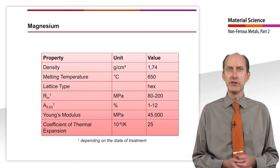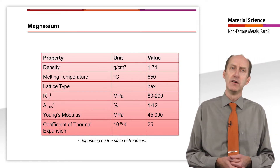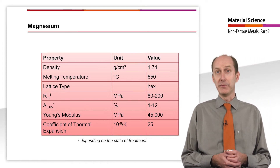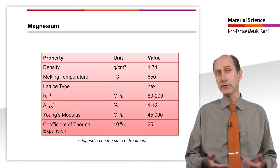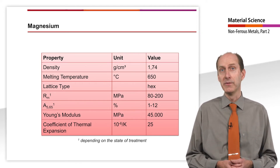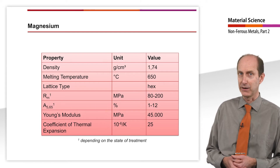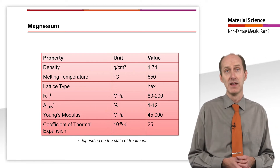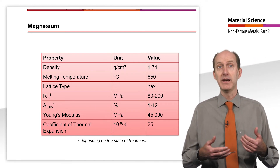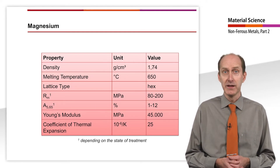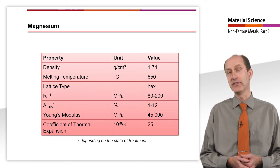The Young's modulus of magnesium alloys at 45,000 MPa is once again significantly lower than that of aluminum alloys at 70,000 MPa. However, this can be advantageous if a high damping capacity is required.